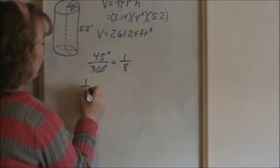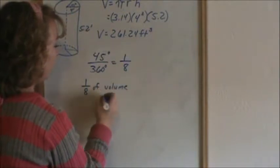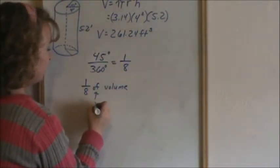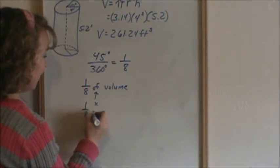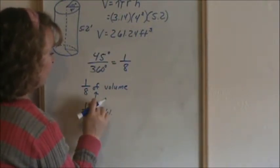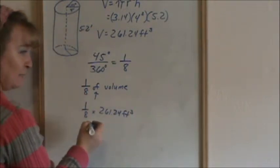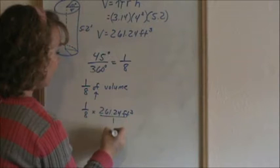So if we say 1 eighth of the volume in the world of math, of means multiply. So we want 1 eighth times the volume of 261.24 cubic feet. How do you turn any number into a fraction? By putting it over 1.